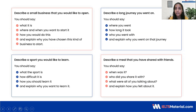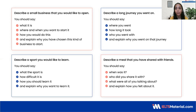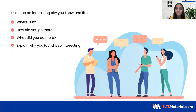So each cue card has the main topic written at the top — let's say, describe a small business that you would like to open. And then you can see there are a series of bullet points. Now, these bullet points are guide posts. They will help you to add more ideas to the topic, but do remember that these are not the only points that you can talk about. You can always go beyond these points. Essentially, it's more about the story that you're narrating for the two minutes that you have. So today we are going to deal with this cue card: describe an interesting city you know and like.